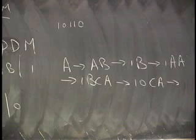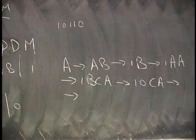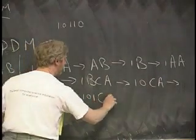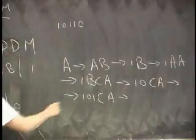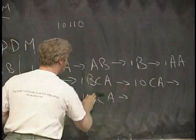Everybody notice that? All right, just something to notice. Let's keep going. How do we continue here? C to a 1. 1, 0, 1, CA. 1, 0, 1, A.